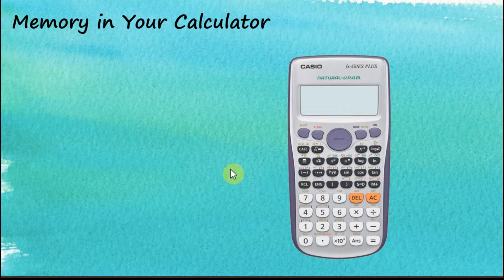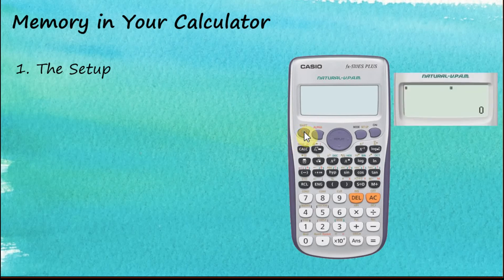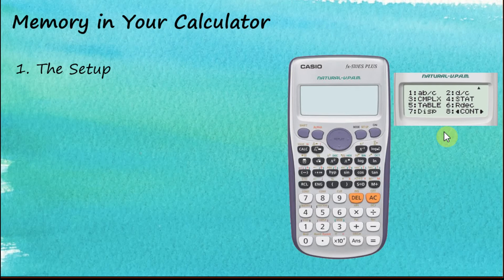There are a few types of memories in your calculator and we are going to discuss them one by one. The very first one is the setup. After switching on your calculator and clicking on the Shift Setup buttons, you will see a few options according to your preference. If you would like to see more choices, click the Next button to go to another screen. After you make your options, your calculator will remember them even though it is switched off. This is one kind of memory in the calculator.